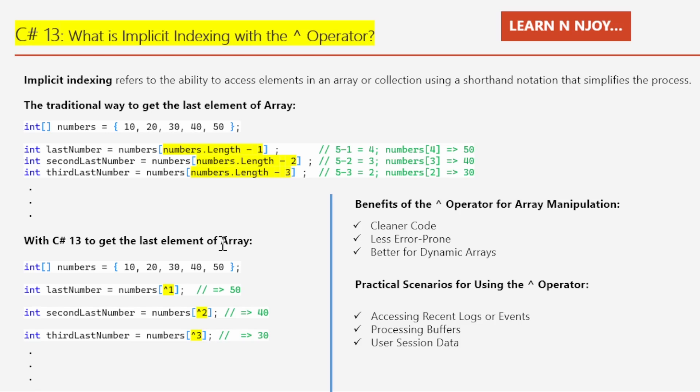Now let's talk about the benefits of the caret operator. Number one: cleaner code — using the caret operator makes our code more readable and expressive, especially with longer arrays or lists. Number two: less error-prone — avoiding the length-minus-one calculation reduces the chance of off-by-one errors, which are easy mistakes to make when coding under pressure. Number three: better for dynamic arrays — this is particularly useful when working with arrays or lists whose length isn't always known ahead of time. With the caret operator, we simply specify what we want from the end and C# handles the rest.